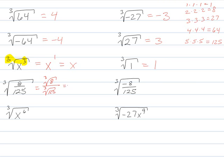So 2 fifths. Here it will be negative 8 cube root and 125 cube root. So negative 2 fifths.